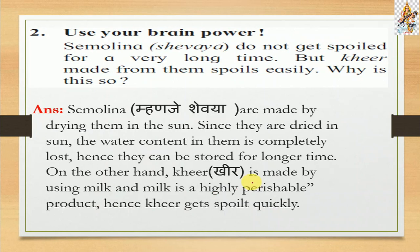Question number two, Use Your Brain Power: Semolina (shevaya) does not get spoiled for a very long time, but kheer made from it spoils easily. Why? The answer is: semolina is made by drying in the sun, so the water content is completely lost, allowing it to be stored for a longer time. On the other hand, kheer is made using milk and milk products, which are highly perishable, so kheer gets spoiled quickly.